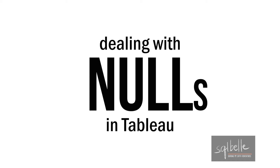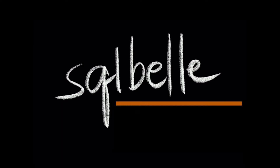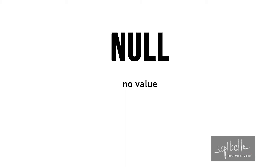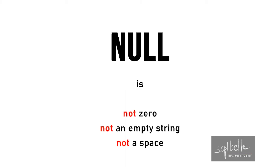In this video, we're going to talk about nulls and how to deal with them in Tableau. A very simple definition of null is no value — when something is null, it means there is no value assigned. It is also very important to note that a null is not a zero, not an empty string, and not a space. A zero, an empty string, and a space are still considered values in programming languages. A null is none of these.